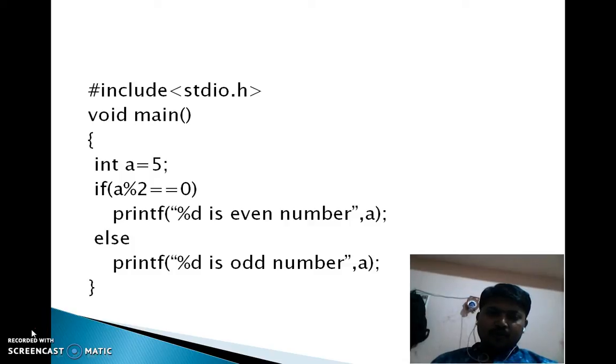If a mod 2 is equal to 0 means if a divided by 2 and remainder is 0 then number is even number else that number is odd number.